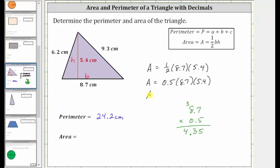So now we know the area is equal to 4.35 times 5.4. So now let's determine this product. Notice now the first factor contains two decimal places, and the second factor contains one decimal place, and therefore the product will contain three decimal places.